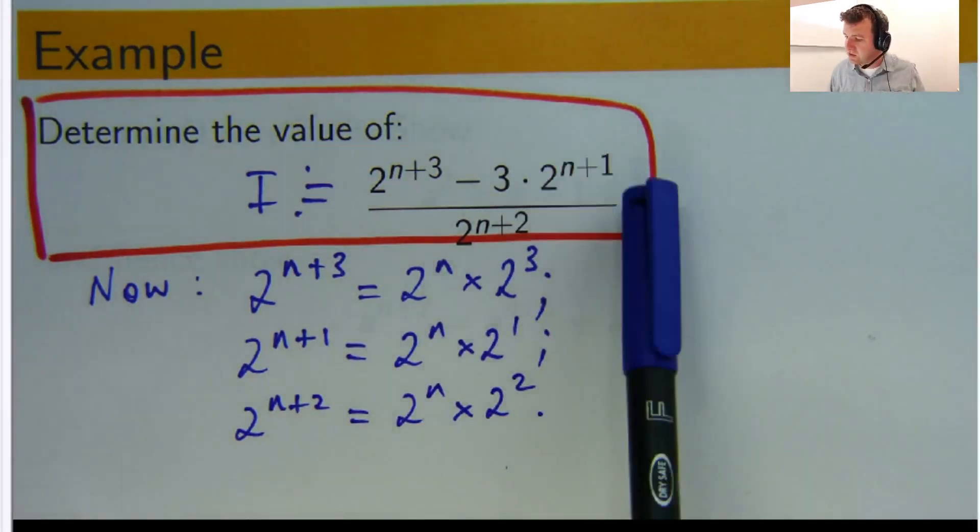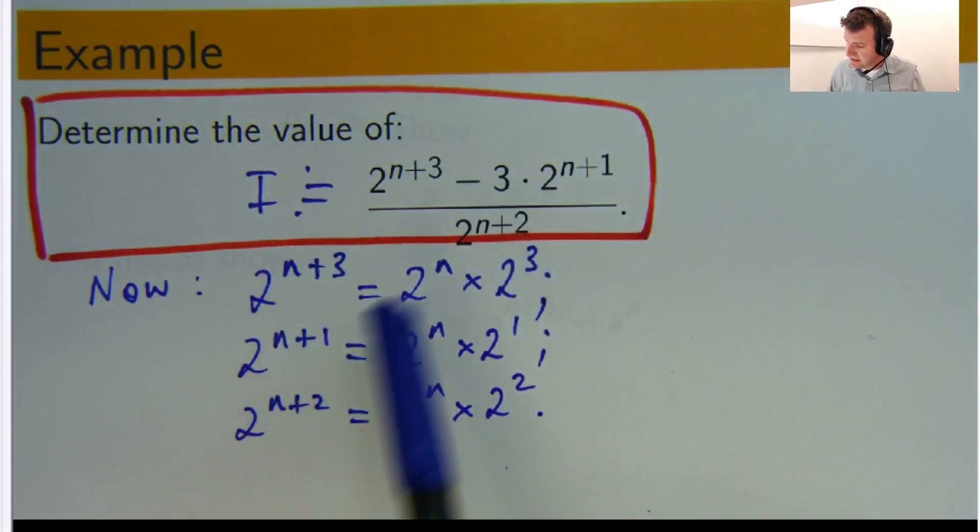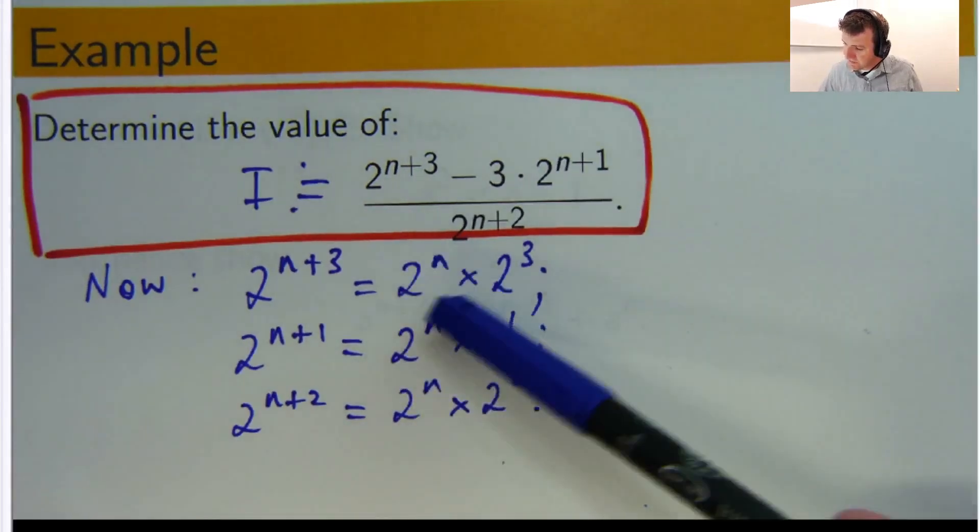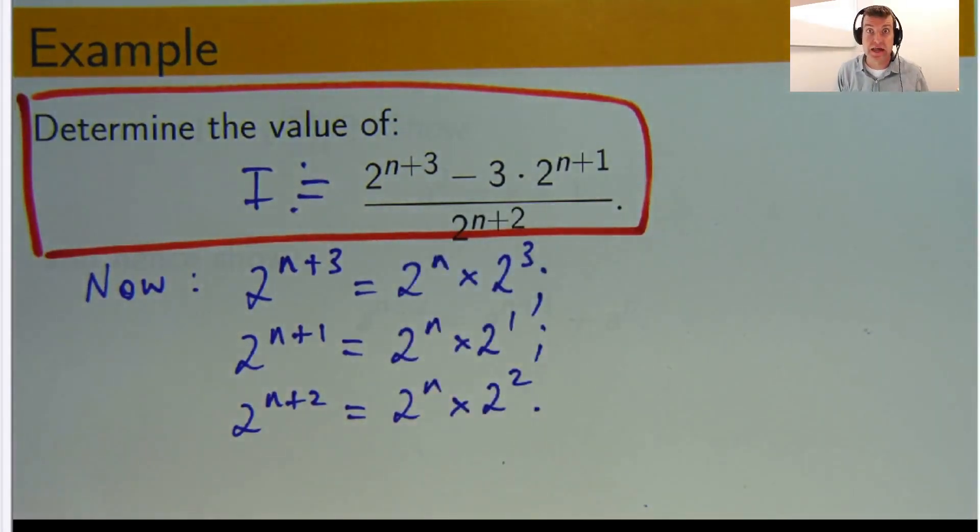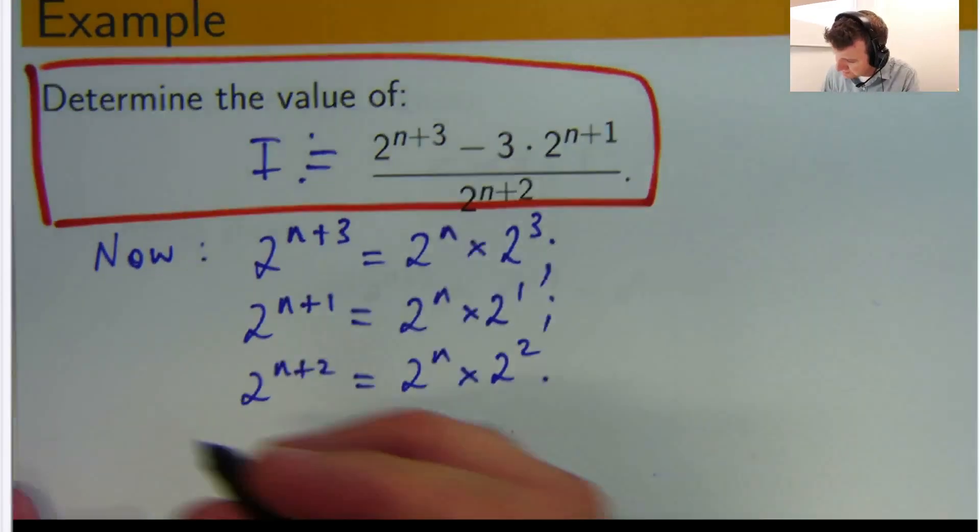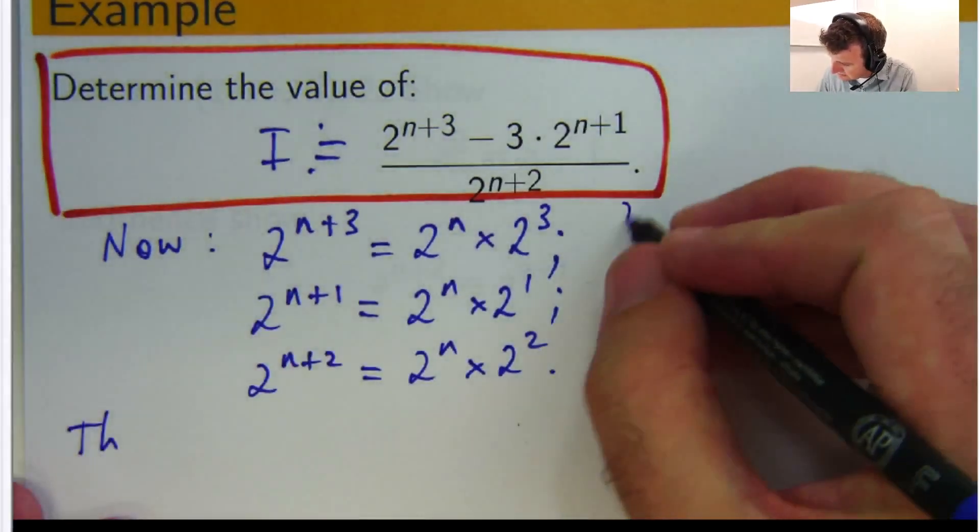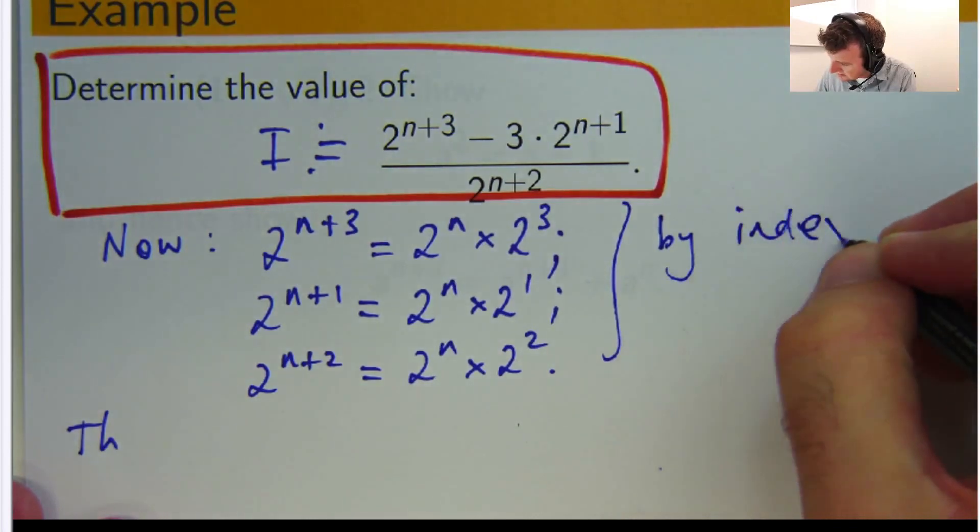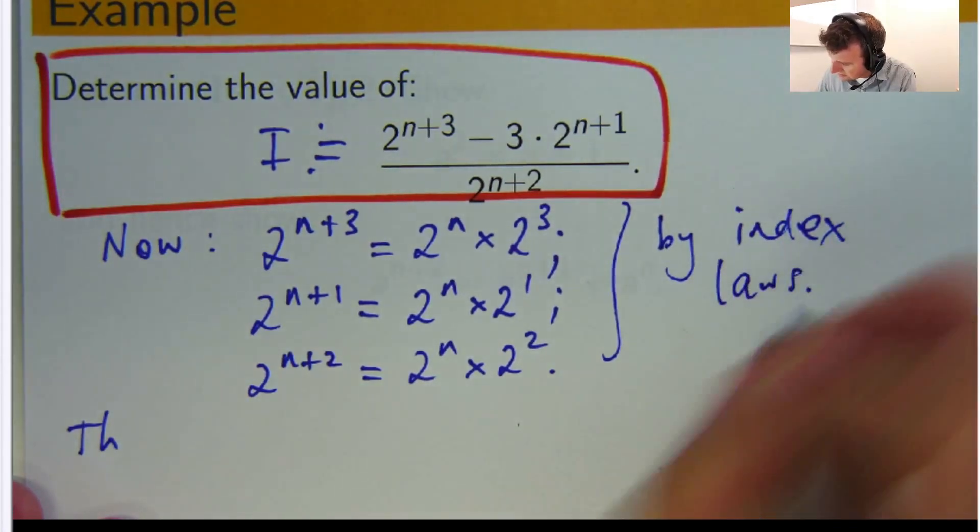So what I'm going to do is I'm going to replace these three things here, and you can see I've got a common factor of 2 to the n in every expression now. So this is by the index laws.